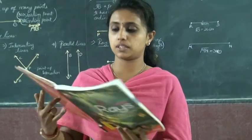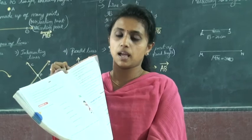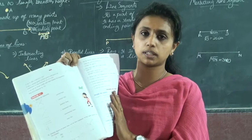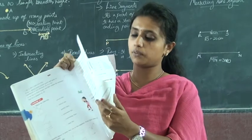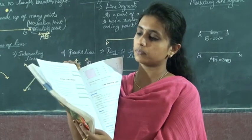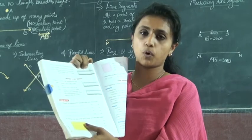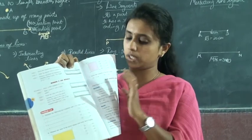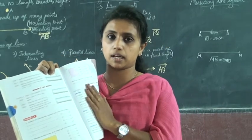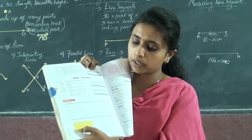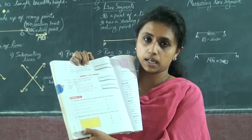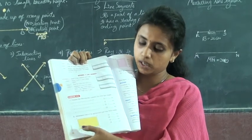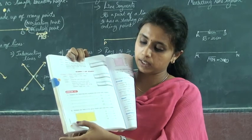Now I will give you an activity. Take page number 98, Exercise 4.1 — try to do all the problems in your textbook. And one more thing: page number 100, Exercise 4.2, Part A and Part B. We are going to measure the length of AB using the scale.